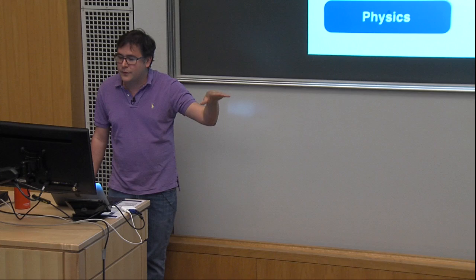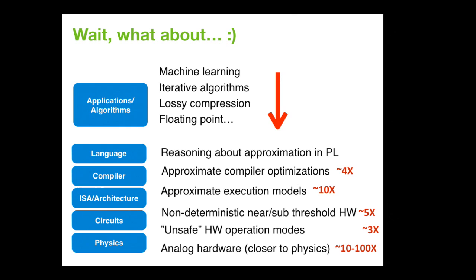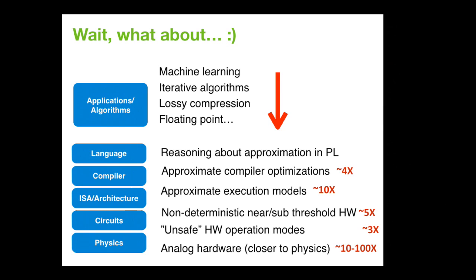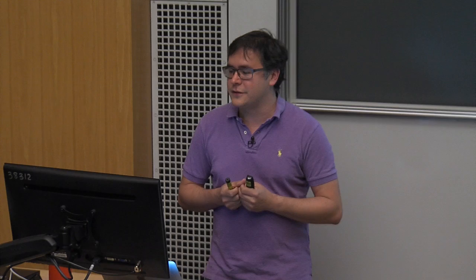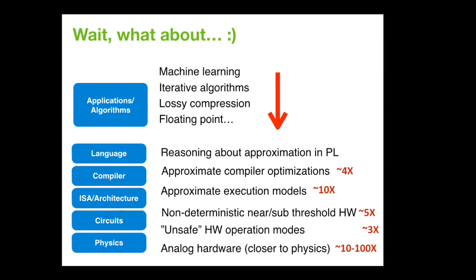There's huge potential here. Some work at MIT and in our group has shown that if you compile a program in a slightly relaxed way — skipping some loop iterations, reducing the precision of computations by reducing the bit width, or changing a multiplication to a bit shift — you can get 4x better performance with typically unnoticeable degradation in quality. Using approximate execution models where you use a prediction of what the program does, you can get at least 10x energy efficiency. And if you go to analog circuits instead of digital logic, you can crack the digital barrier and get 100x, maybe 1000x.